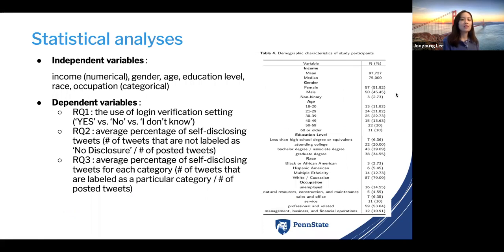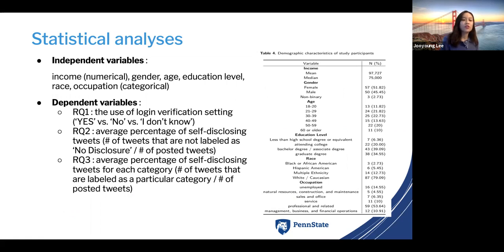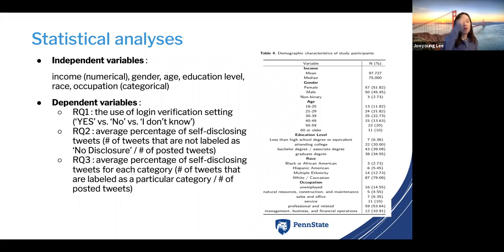As part of the statistical analysis to answer the research questions, we had several independent variables including income, gender, age, education level, race, ethnicity, and occupation, which were closely related to users' social demographic information. The dependent variables differed based on each research question.